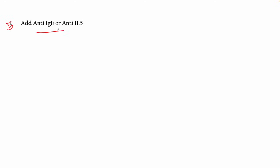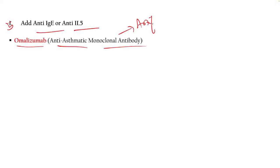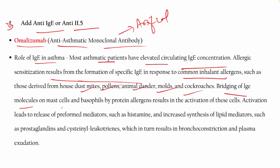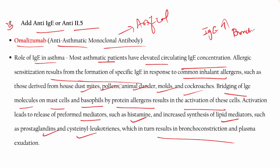Adding anti-IgE therapy — omalizumab — is a recombinant humanized monoclonal antibody. Most asthmatic patients have elevated IgE because they are sensitive to specific allergens such as dust mites, animal dander, and cockroach. Bridging of IgE molecules on mast cells and basophils by protein allergens activates these cells, releasing histamine, lipid mediators, and prostaglandins, which lead to bronchoconstriction and plasma exudation.